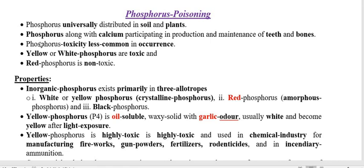Another excellent feature of Phosphorus is that the toxicity with Phosphorus poisoning is very less in occurrence. If you are going to consider which toxicant of Phosphorus is more poisonous, then yellow, also known as white Phosphorus, is toxic. However, red Phosphorus is non-toxic. So yellow or white Phosphorus is important because it causes Phosphorus poisoning.